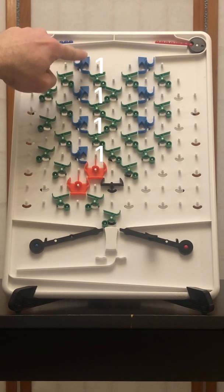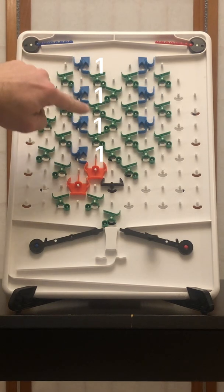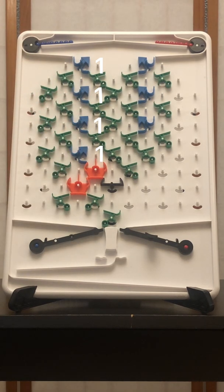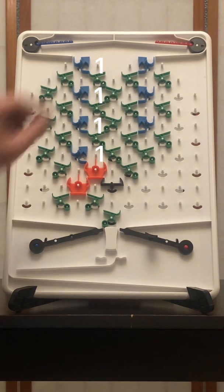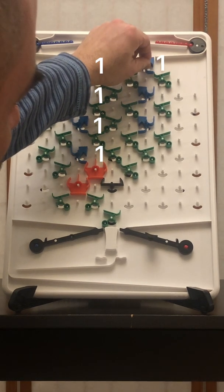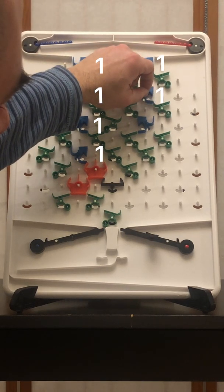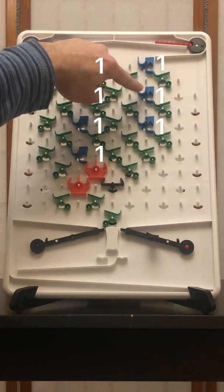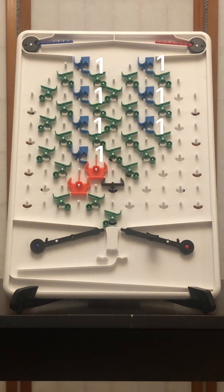So we have one plus two plus four plus eight is 15. And we are going to subtract seven. So I'm going to set this to seven. So we have one plus two plus four is seven.